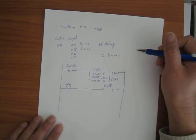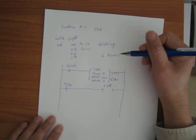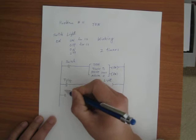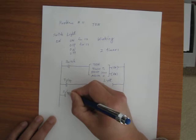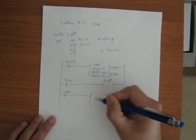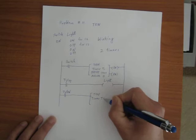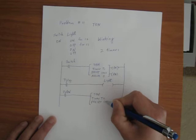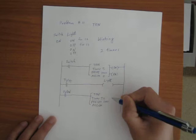After one second the light goes off. We want it off for another second, then come back on again. So I'm going to use another timer. When T1 DN is true — when this timer is done — I'll turn on another timer: TON, timer T2, with a preset of 1000, so that I have one second of timing.